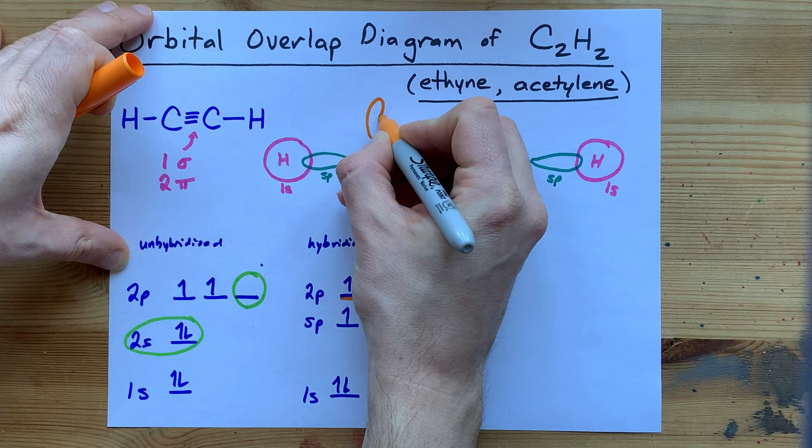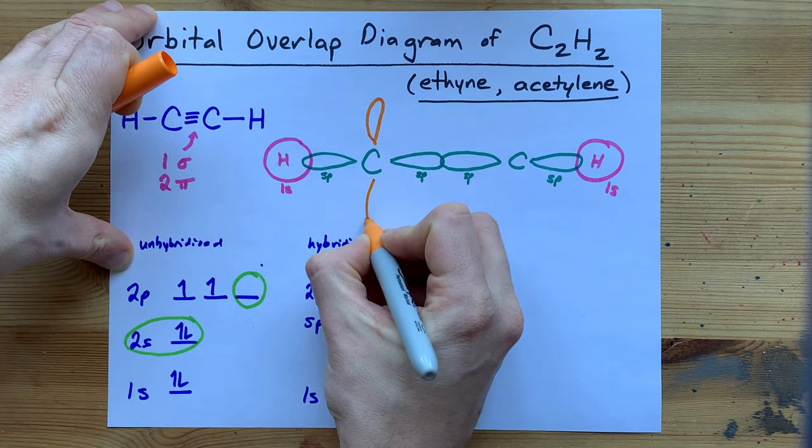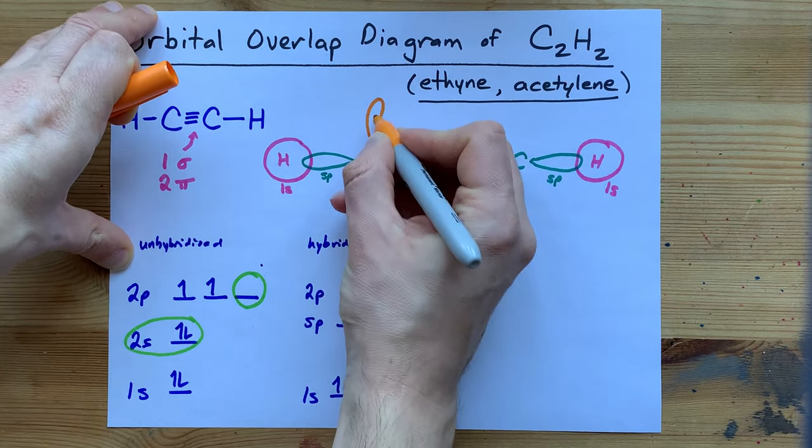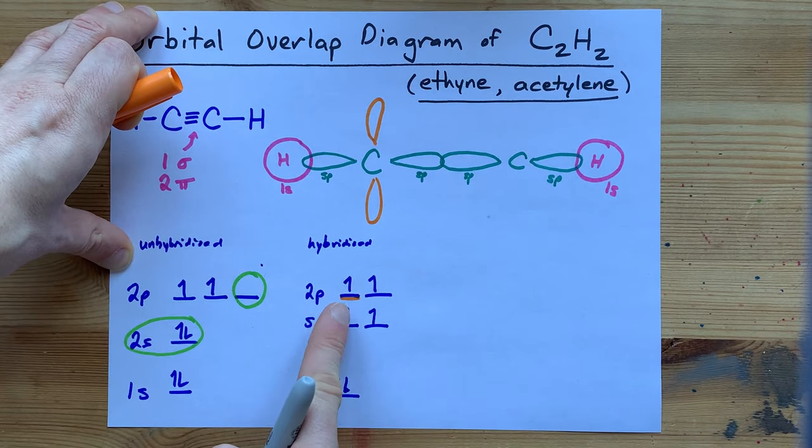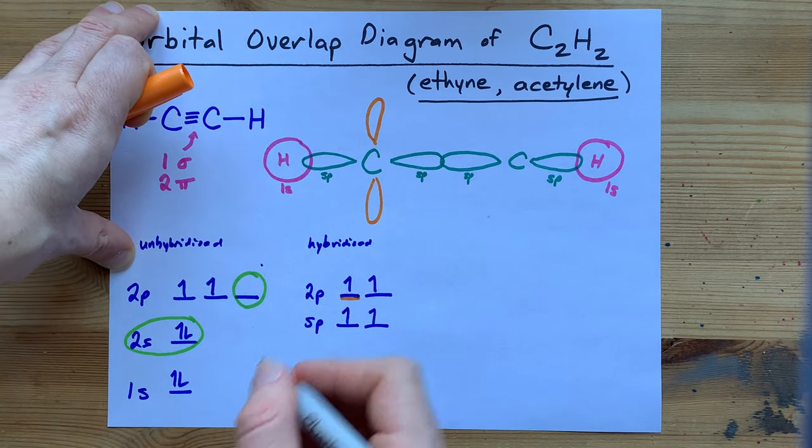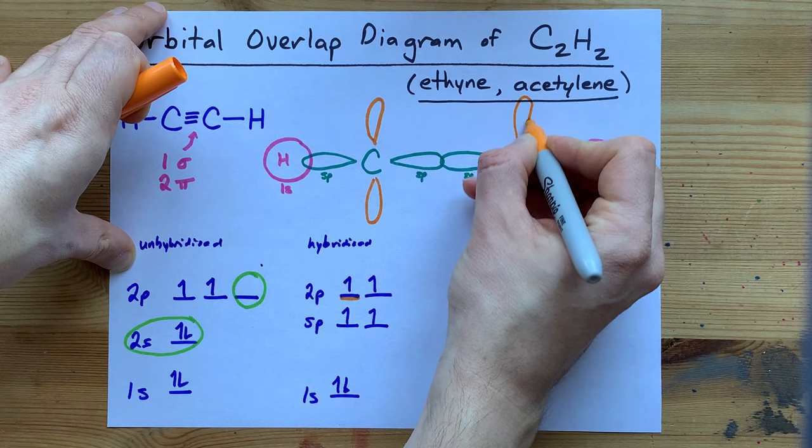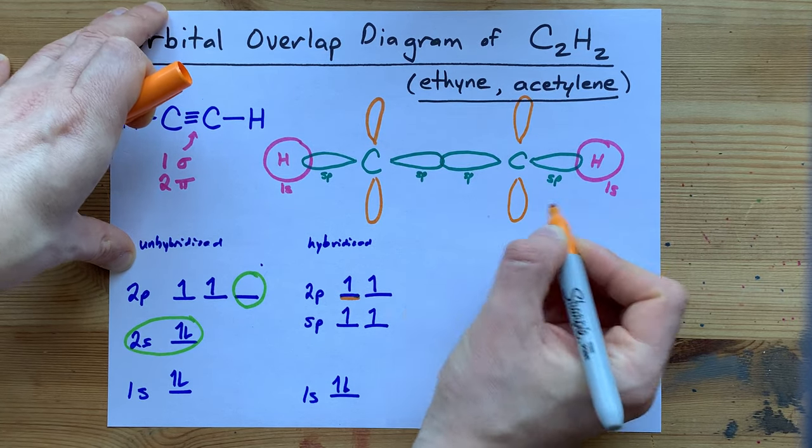I'm going to draw this one first. I'm just going to put that there to guide your eyes. The two p orbital, this is half of it, and this is the other half of it. Combined, these make that one two p orbital, and this carbon also has an extra two p orbital.